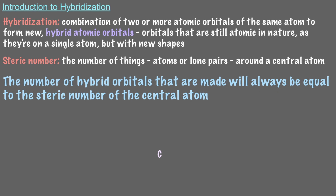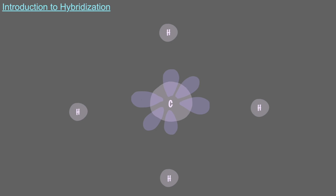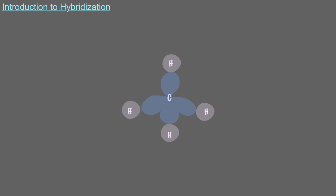Since carbon's valence shell is comprised of one 2s and three 2p orbitals, it's these four valence orbitals that combine to form four hybrid atomic orbitals. Notice, when the hydrogen atoms are far away from the carbon atom, the carbon atom's valence orbitals are 2s and the three 2p orbitals. But as the hydrogens get close to the carbon, these four valence atomic orbitals mix together to form new hybrid orbitals. We call these hybrid atomic orbitals sp3, because they're made from the mixing of one s orbital and three p orbitals.